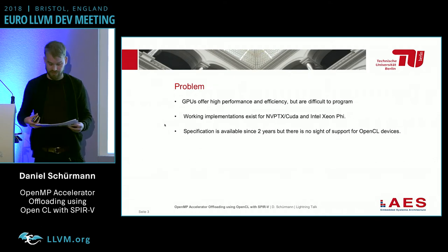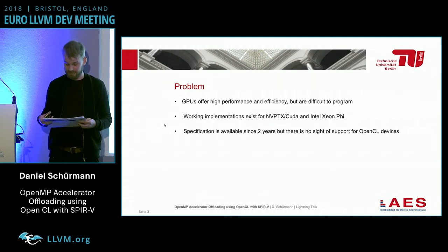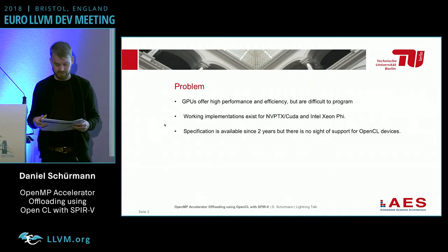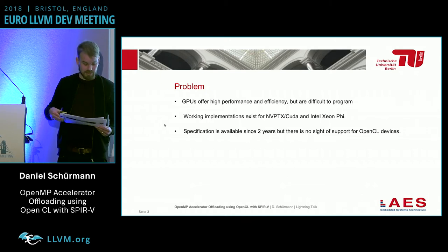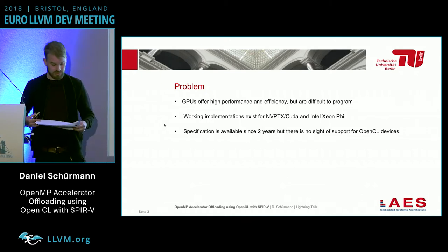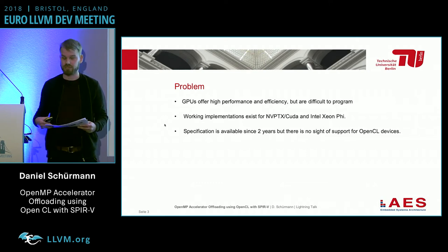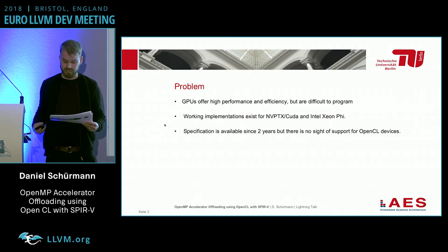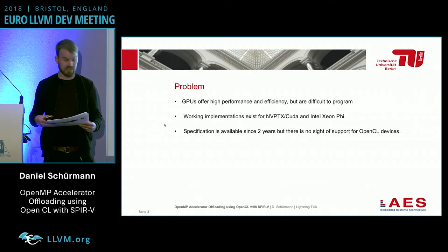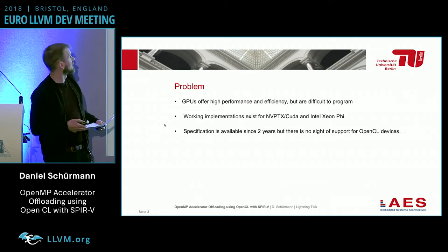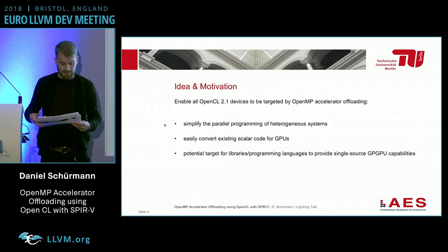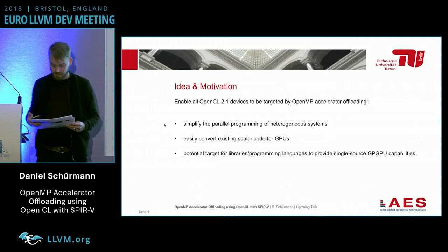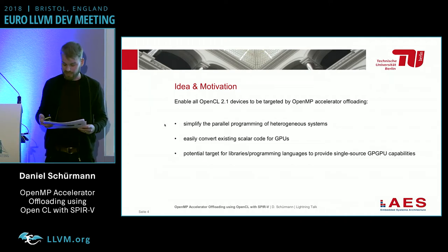Unfortunately, until now, there are only vendor-specific implementations for these new offloading capabilities, like for CUDA or Xeon Phi. So the motivation is to enable all OpenCL 2.1 devices to be targeted by OpenMP accelerator offloading. And by emitting SPIR-V, we also keep the compiled programs portable across different devices.